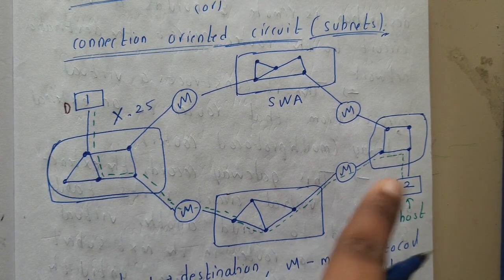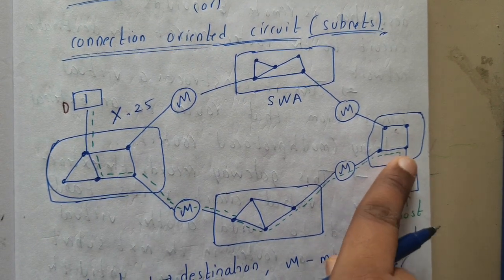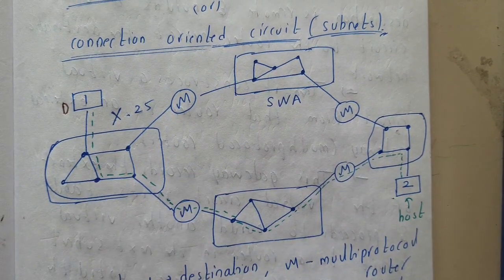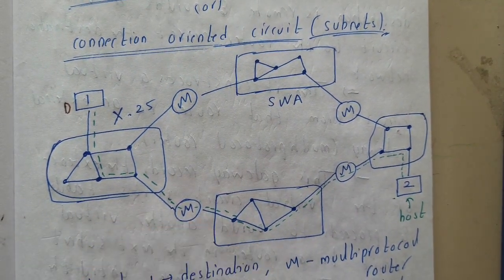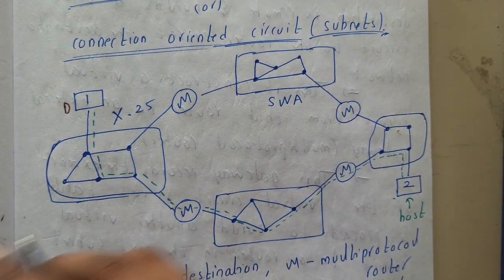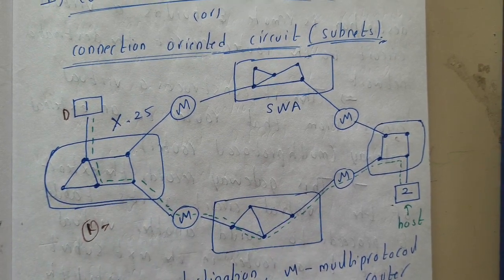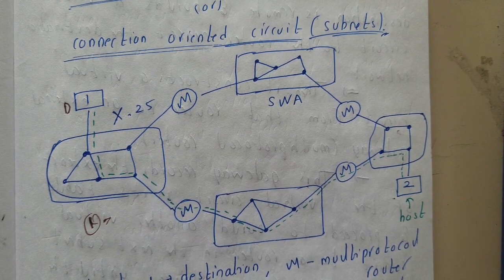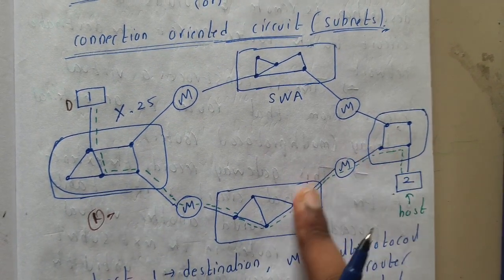Since this is connection-oriented, first you need to establish a connection. You might wonder why a particular path is selected — you can select any path. Routing algorithms help select the shortest, most efficient, and affordable path. Assume they selected this path.